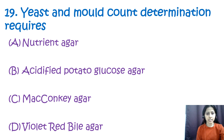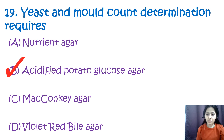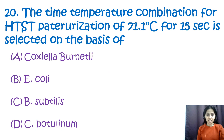Question number nineteen: yeast and mold count determination requires option A: nutrient agar, option B: acidified potato glucose agar, option C: MacConkey agar, option D: violet red bile agar. The correct answer is option B — acidified potato glucose agar. This medium is selective for fungi and is used for determination of yeast and mold colonies present in food samples.